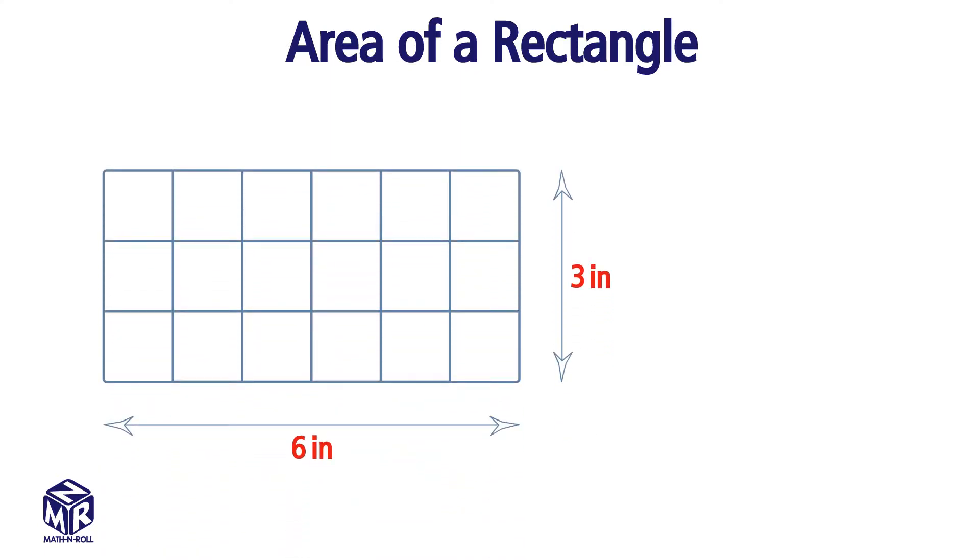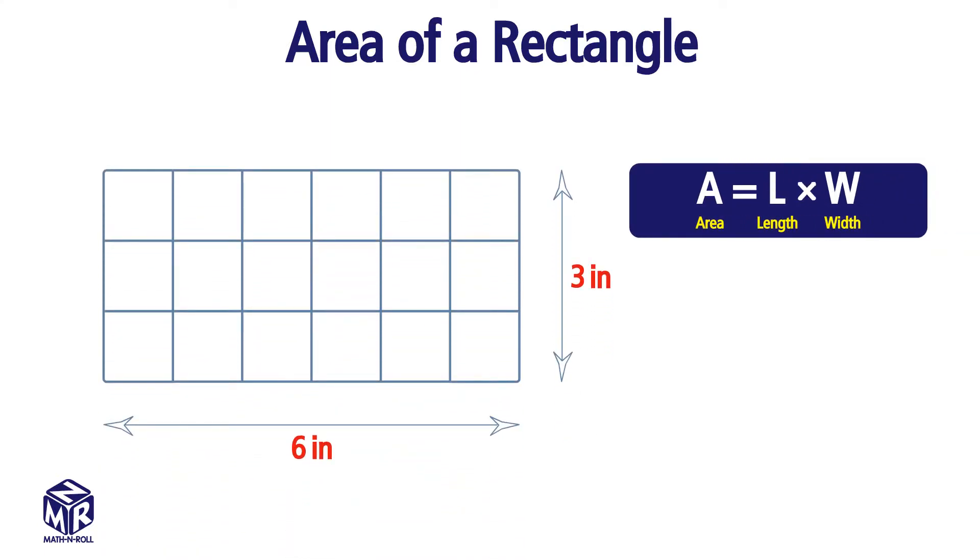Area of a rectangle. How do we find the area of a rectangle? To find the area, we multiply the length times the width.